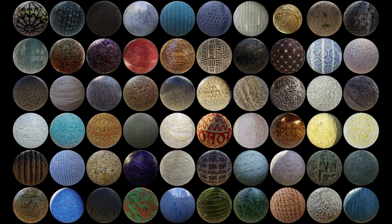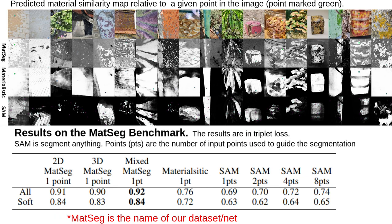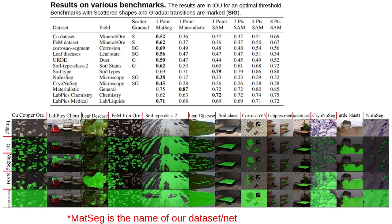In addition to the synthetic dataset, we also present the first general benchmark for zero-shot material state segmentation. The goal is to evaluate the segmentation of material states without being limited to a specific class or domain. This includes materials with complex or scattered shapes, fuzzy boundaries, or gradual transitions. We use this benchmark to test the net trained on the infused data, as well as Segment Anything Model (SAM) and Materialistic. Materialistic and SAM performed poorly on this benchmark and failed to handle scattered patterns and gradual boundaries. In contrast, the net trained on our dataset gave far better results on this and many other material benchmarks.